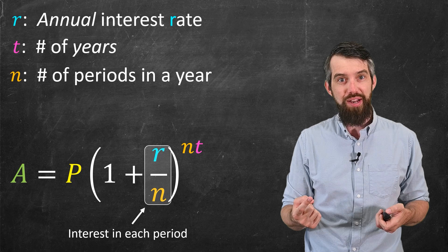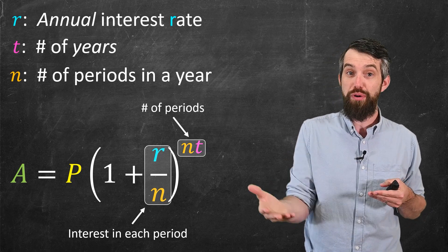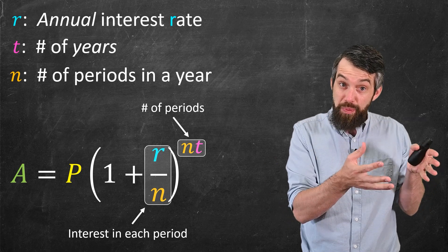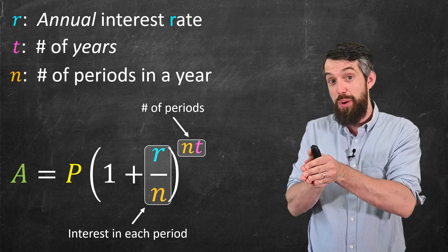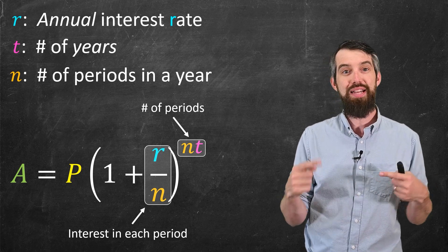And then in the exponent, where we've got the n times the t, this tells you the total number of periods. n is the periods per year, t is the number of years, so n times t is the total number of periods. And the idea is,